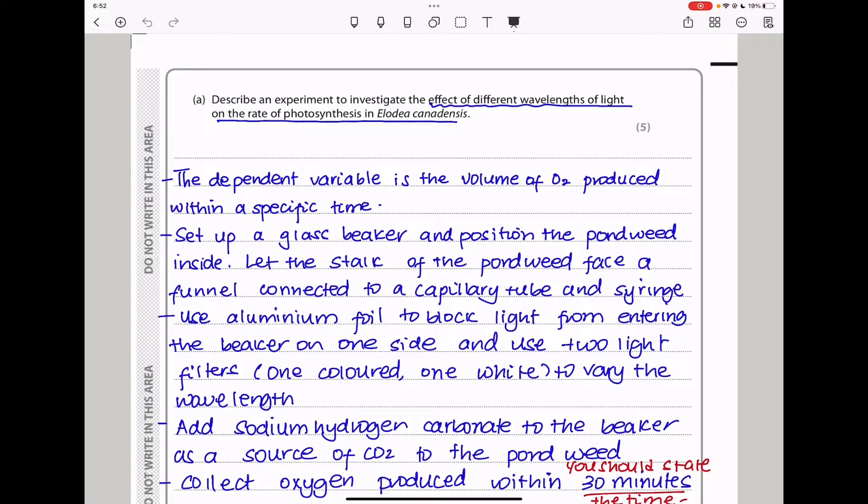Here they say, describe an experiment to investigate the effect of different wavelengths of light on the rate of photosynthesis of Elodea canadensis. With these kinds of questions, always begin by stating the dependent variable, in this case what you want to measure. So I say the dependent variable is the volume of oxygen produced within a specific time. This is what we're going to use to calculate the rate. Also remember to write that you should set up at least five different experiments.